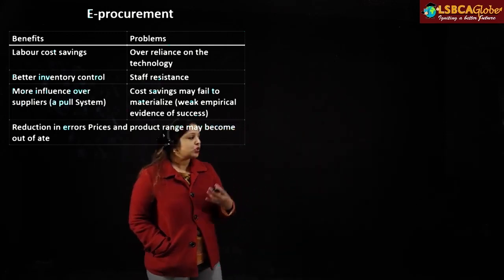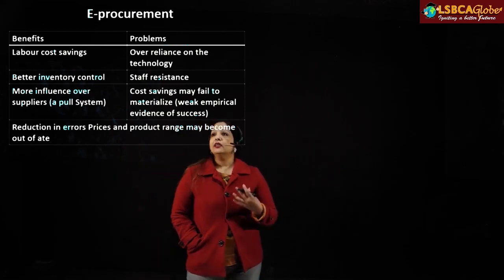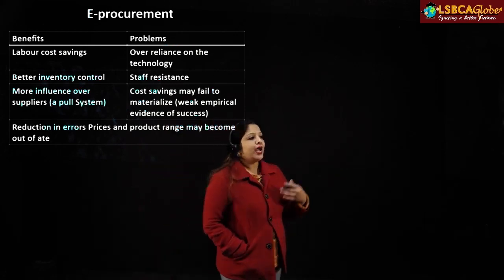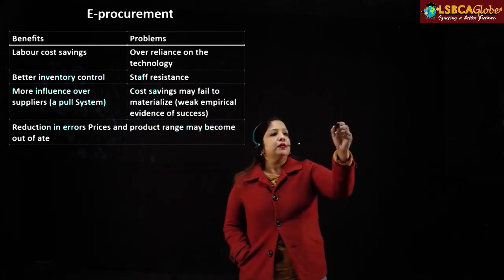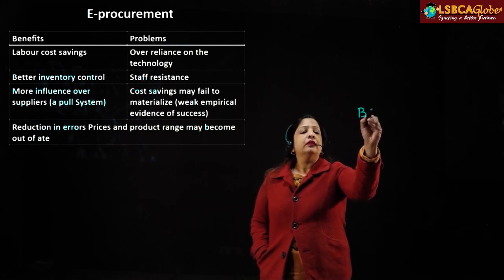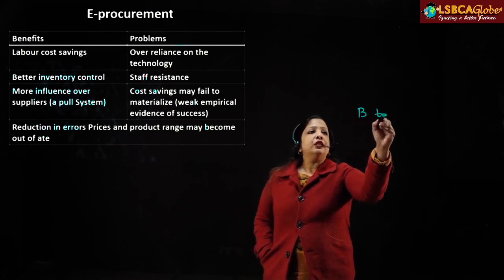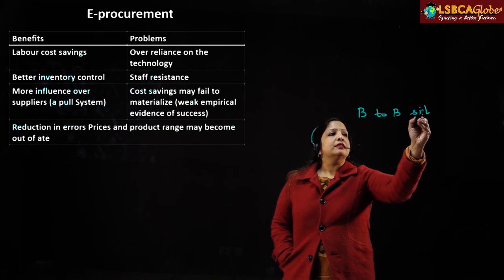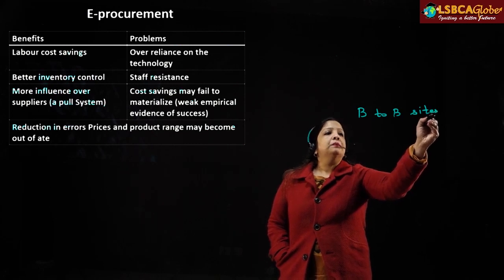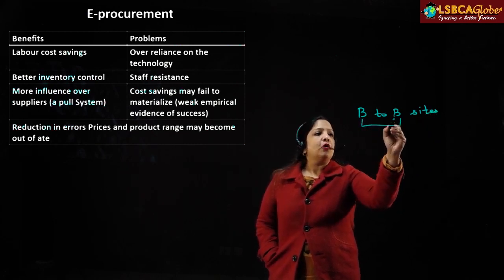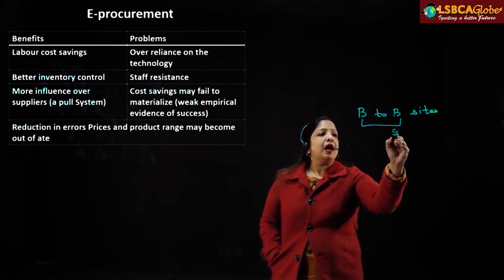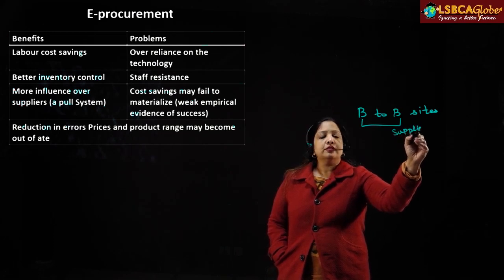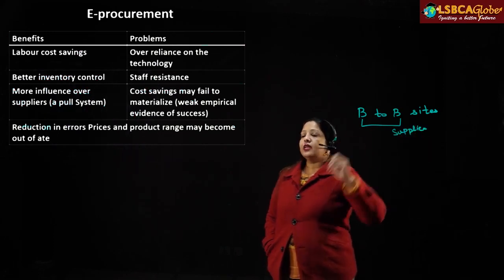So basically, e-procurement is purchasing the goods over the internet, and it is possible through B2B sites — that is, business-to-business sites — where businesses purchase from suppliers over the internet.